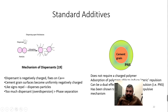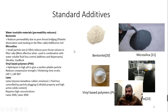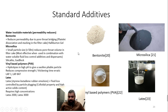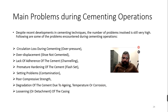Dispersants work by adsorbing around cement particles and preventing them from getting too close to each other, thereby reducing friction between particles. Additional special additives include bentonite, which is used to reduce the permeability of set cement, and micro-silica, which is used to reduce pore throat size inside the cement. The choice of additive depends on the specific downhole conditions.